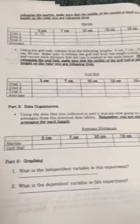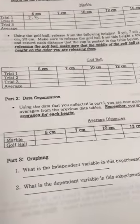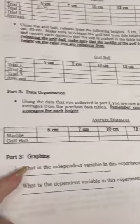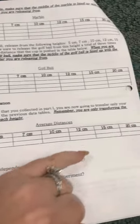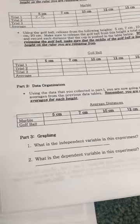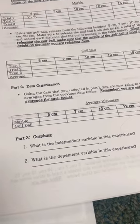The third graph down here, you're just writing your averages that you got for the marble and the golf balls at the different heights. And then you're going to identify the independent variable, the dependent variable in this experiment.